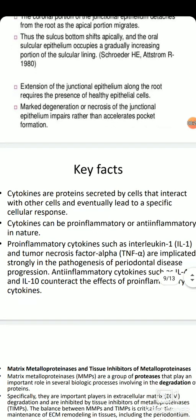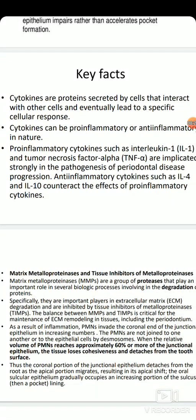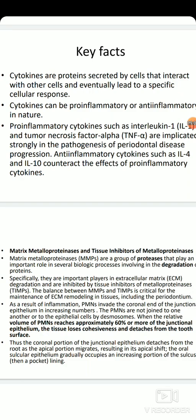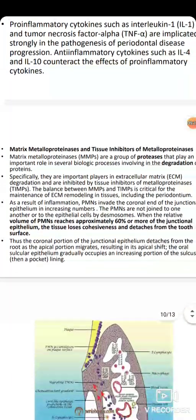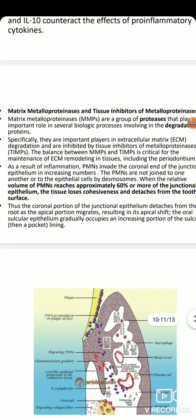Key facts in these mechanisms include cytokines, which are proteins secreted by cells that interact with other cells and eventually lead to a specific cellular response. Cytokines can be either pro-inflammatory or anti-inflammatory. Pro-inflammatory cytokines such as interleukin-1 (IL-1) and tumor necrosis factor alpha (TNF-α) are strongly implicated in the pathogenesis of periodontal disease progression. Anti-inflammatory cytokines such as interleukin-4 (IL-4) and interleukin-10 (IL-10) counteract the effects of pro-inflammatory cytokines. Additionally, there are matrix metalloproteinases (MMPs) and tissue inhibitors of matrix metalloproteinases (TIMPs).